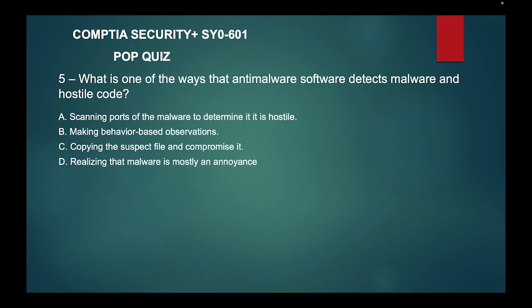Question five: What is one of the ways that anti-malware software detects malware and hostile code? A) Scanning ports of the malware to determine if it is hostile, B) making behavior-based observations, C) copying the suspect file and compromising it, or D) realizing that malware is mostly an annoyance.